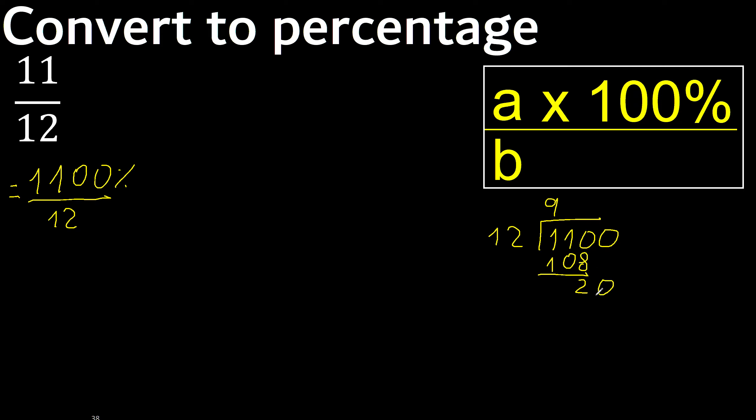Next, twenty. Twelve multiplied by one is twelve. Subtract is eight.